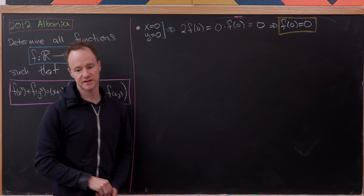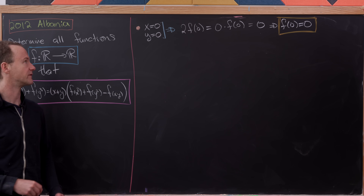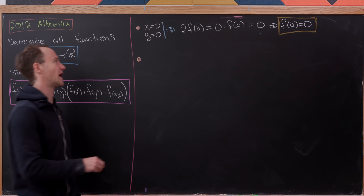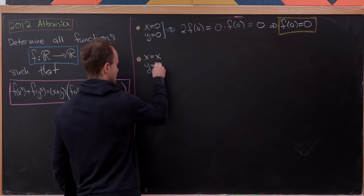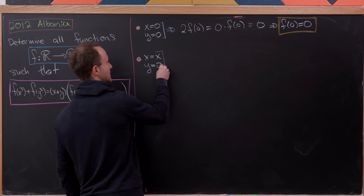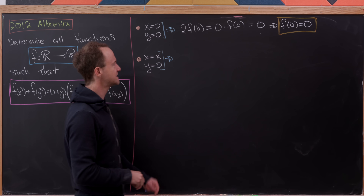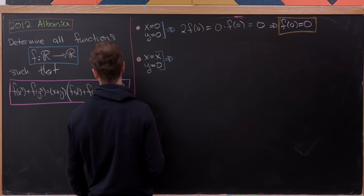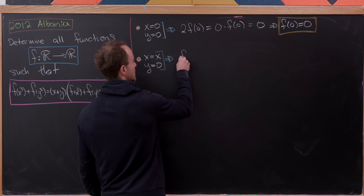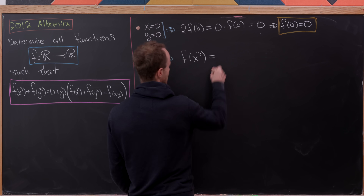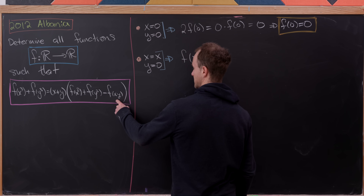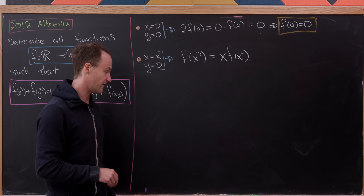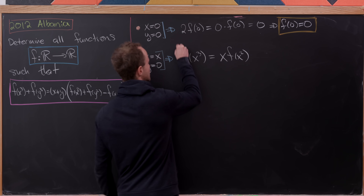Many different functions have the property that f(0) = 0, but this is clearly one of them. Next, let's evaluate with x free and y = 0. We get f(x³) + f(0) = f(x³), and the right-hand side simplifies to x · f(x²) since the f(0) terms vanish. So we obtain the relationship f(x³) = x · f(x²).